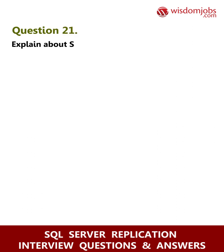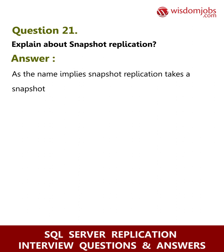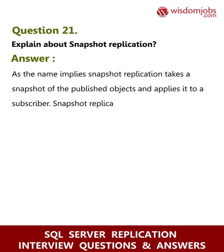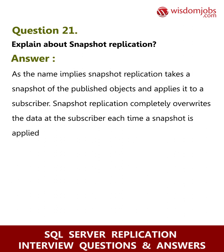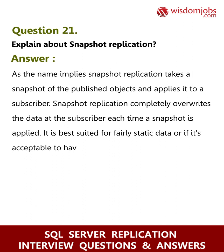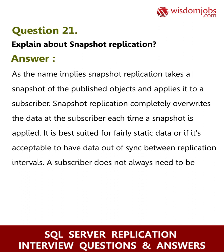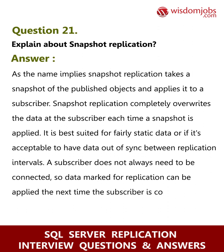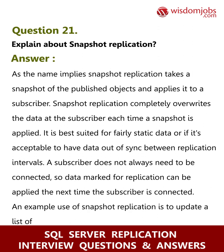Question 21: Explain about snapshot replication. Answer: As the name implies, snapshot replication takes a snapshot of the published objects and applies it to a subscriber. Snapshot replication completely overrides the data at the subscriber each time a snapshot is applied. It is best suited for fairly static data or if it is acceptable to have data out of sync between replication intervals. A subscriber does not always need to be connected, so data marked for replication can be applied the next time the subscriber is connected.